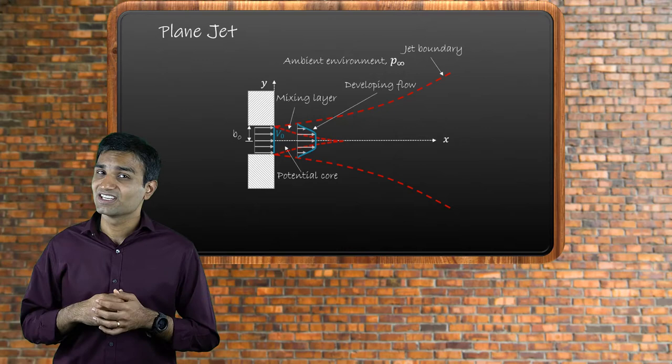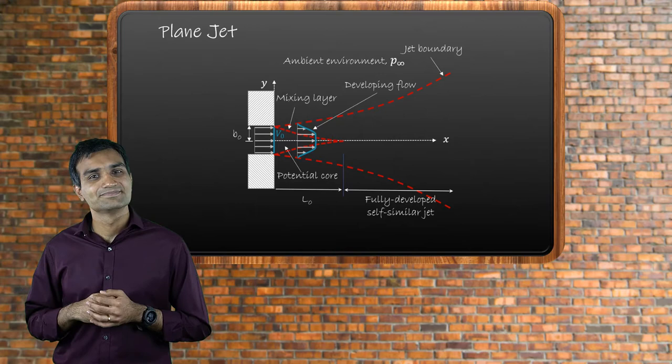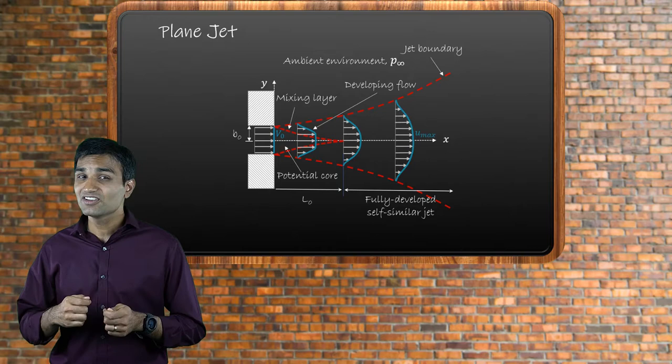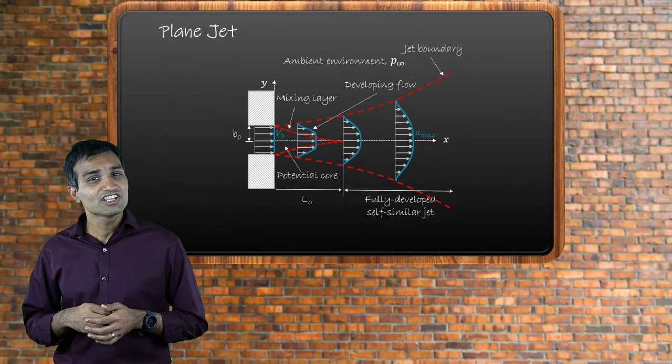This velocity decrease is because of fluid viscosity. After a certain length, the velocity of the jet becomes smooth and its shape does not change anymore. Here, the velocity is said to have achieved a self-similar profile, and the jet region is often referred to as a fully developed self-similar jet.